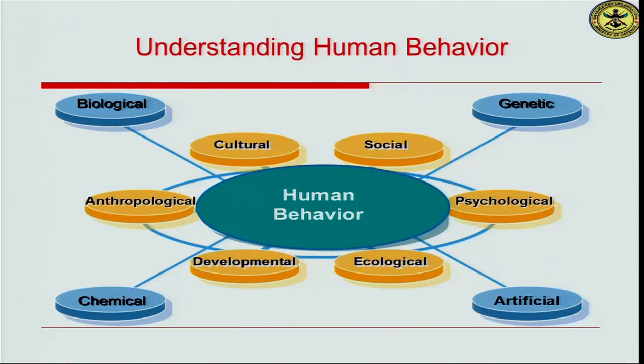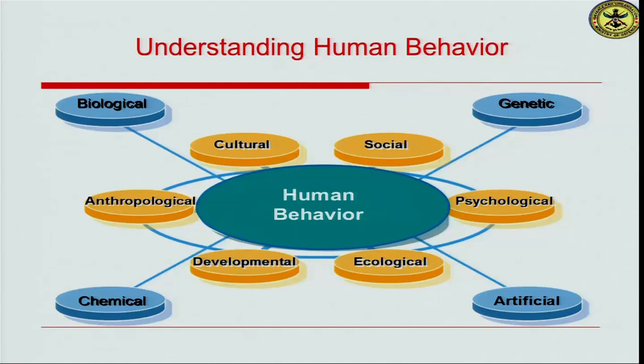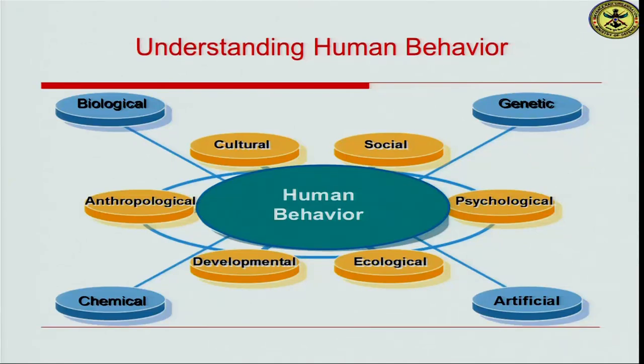One group of sciences relates to hard sciences — genetic, biological, chemical, and artificial. These hard sciences give us a very objective notion about how a behavior is formed and executed in the human system. The genetic system tells us what the inherited properties of our behavior are. The biological system tells us how such behaviors are expressed. Chemical and mathematical sciences tell us how physiochemical reactions take place when a particular behavior is executed, and how we can understand the rudimentary part of behavior through mathematical sciences.